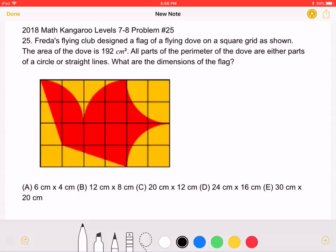This is the 2018 Math Kangaroo Level 7-8 Problem No. 25. Freda's Flying Club designed a flag of a flying dove on a square grid as shown. The area of the dove is 192 centimeters squared. All the parts of the perimeter of the dove are either parts of a circle or straight lines. What are the dimensions of the flag?